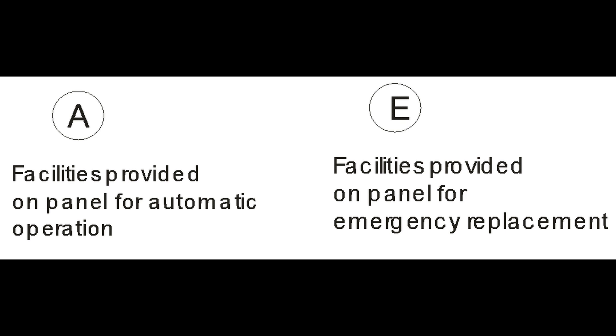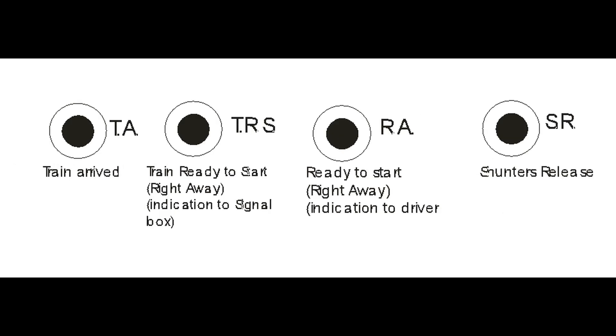Then it is panels showing auto button, emergency replacement button, train arrival plunger, train ready to start plunger, right away plunger, ready to start plunger, all of these are explained.